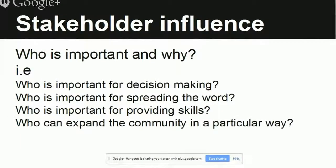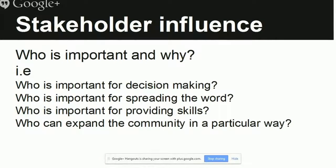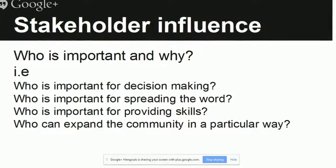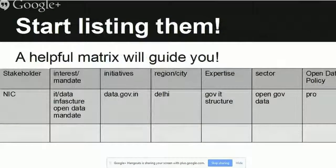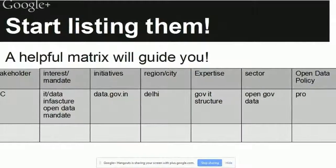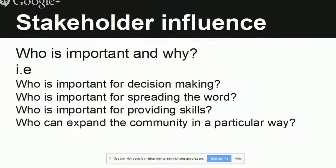So this is kind of the next level: when you're trying to advocate or push something forward, what is the level of influence a particular stakeholder has? These are questions like who is important for decision making, for spreading words, for writing skills, who can expand the community in a different way. When you're filling out your matrix, you can get an idea — I have met five reporters who are interested in building skills, and I know five people willing to teach skills, and it's good to have reporters around because they help spread the word.